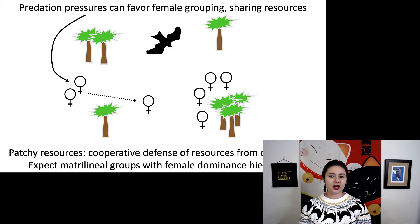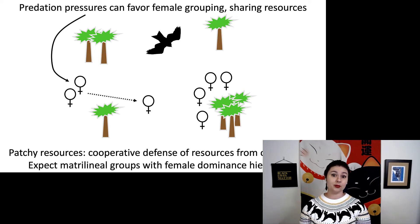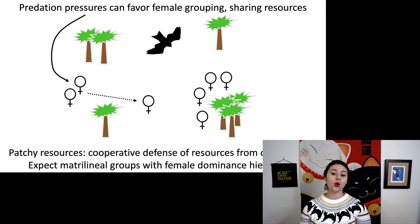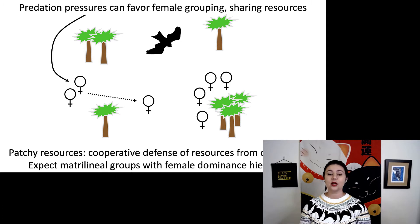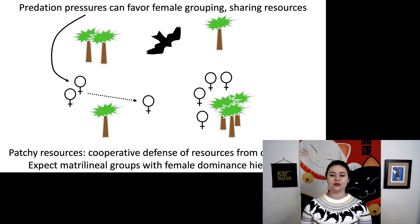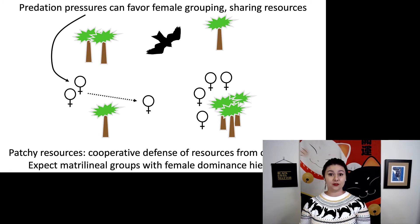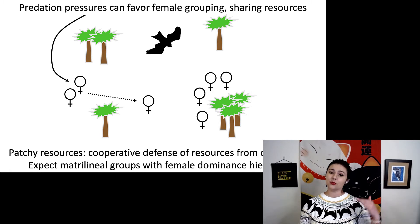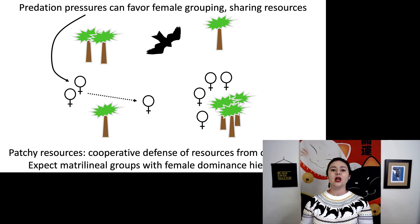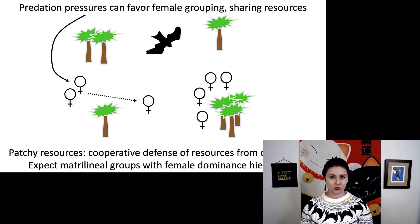We might find different strategies depending on what type of resource we're talking about. With patchy resources, we might see cooperative defense of resources from other groups, and we would expect to have matrilineal groups with female dominance hierarchies. There would be explicitly a dominance among females — some will be at the top and some at the bottom, and those at the top will have access to more resources.